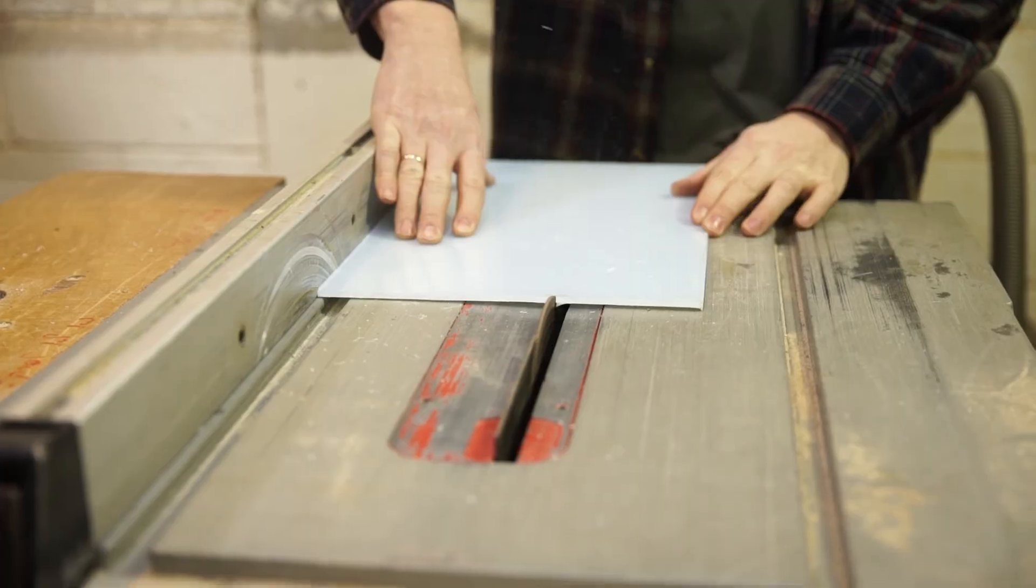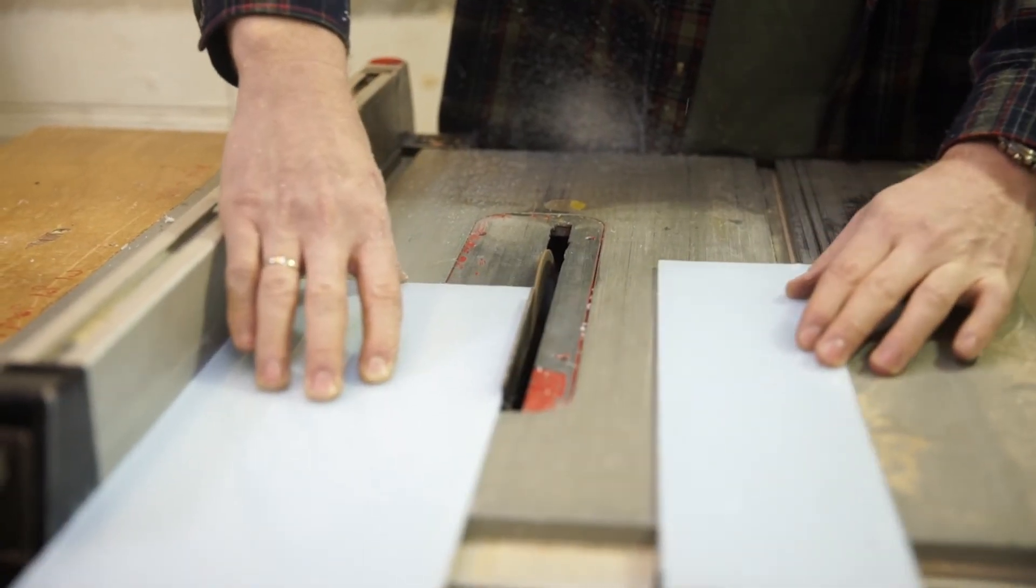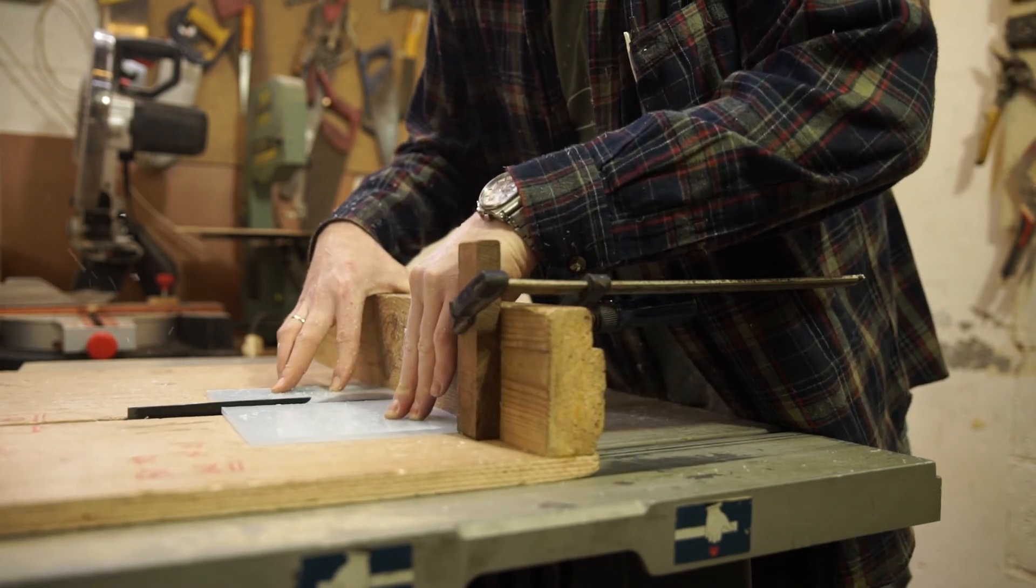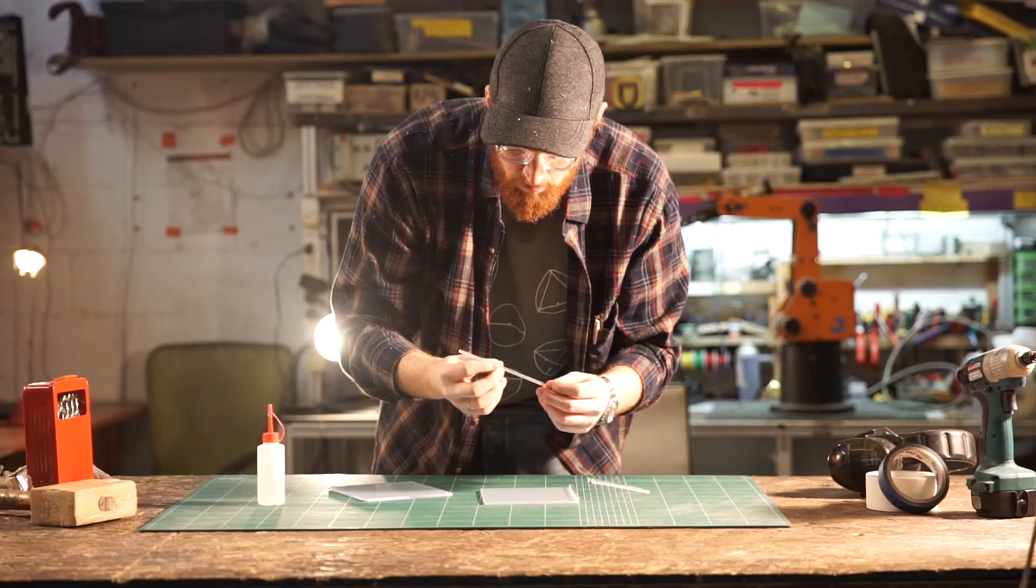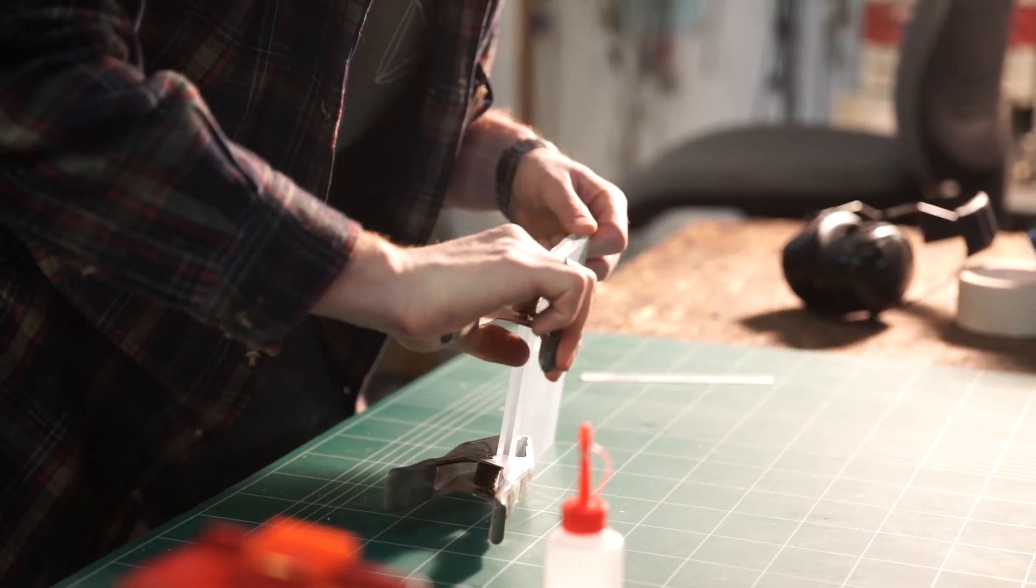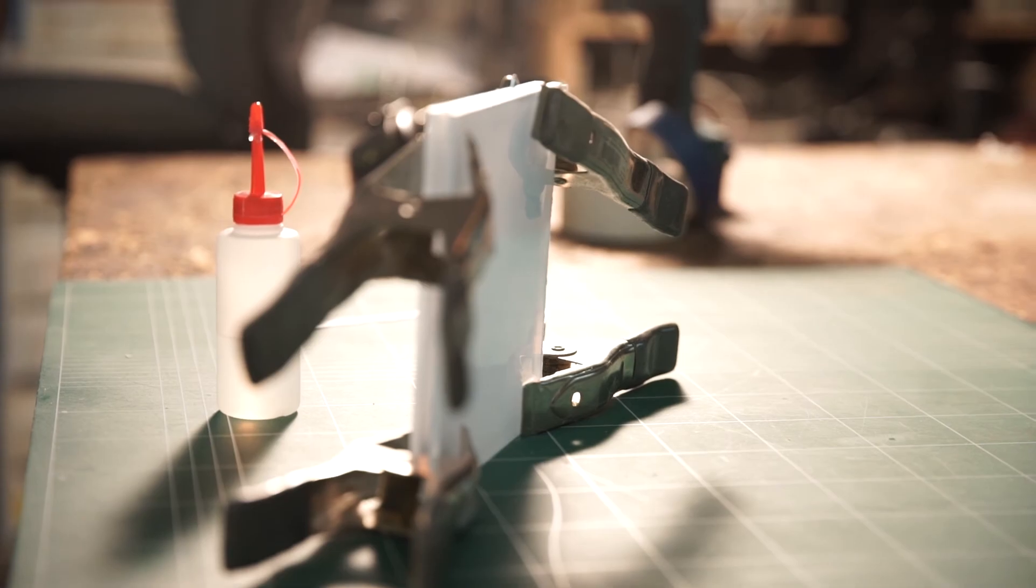I started by making the tank itself. I cut some 4mm clear acrylic into two rectangles and four thin strips that will make the edges of the tank. I assembled the tank and held it together with spring clamps. Once pleased with how everything aligned, I fused the sides together with acrylic solvent.